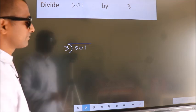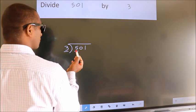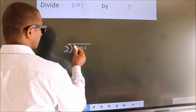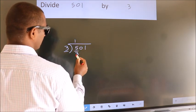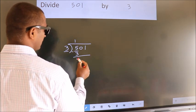Next, here we have 5, here 3. A number close to 5 in 3 table is 3 once 3. Now, we should subtract. We get 2.